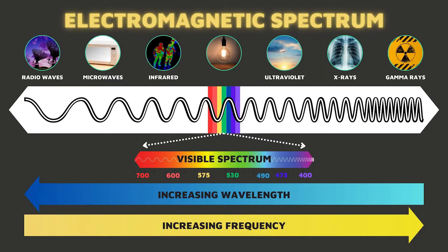Different kinds of light are all around you every day, but most are invisible to our human eyes. Light can be broken up into different types. We call the full known range the electromagnetic spectrum. This means that even when it's dark, light is all around us.